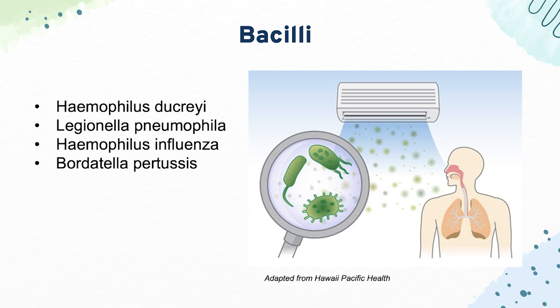Next we have Legionella pneumophila, which causes Legionnaires' disease — pneumonia and GI issues, often from air conditioners. Next we have Haemophilus influenzae, which is an encapsulated bacteria that typically causes epiglottitis — they often show an X-ray with the thumbprint sign. Finally, we have Bordetella pertussis, which causes whooping cough via its pertussis toxin virulence factor.